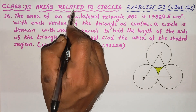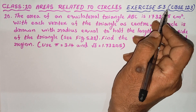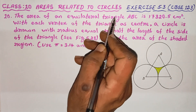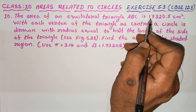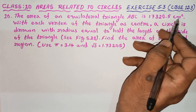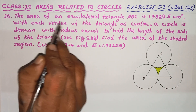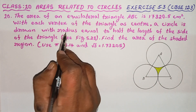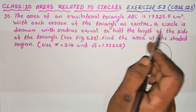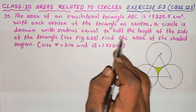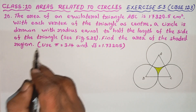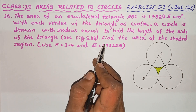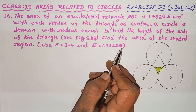Clause 10, areas related to circles, Exercise 5.3, 10th problem. The area of an equilateral triangle ABC is 17,320.5 cm². With each vertex of the triangle as center, a circle is drawn with radius equal to half the length of the side of the triangle. Find the area of the shaded region. Use pi equal to 3.14 and root 3 equal to 1.73205.